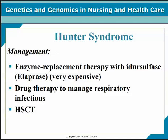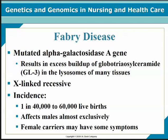I know we're moving through these quickly — they're all in your textbook. I want to give you an overview of what the lysosomal storage diseases are like and a brief overview of management. Fabry's disease is another lysosomal storage disease caused by a mutated alpha-galactosidase A gene. It results in an excess buildup of GL3 in lysosomes and many other tissues. This is an X-linked recessive disorder with an incidence of 1 in 40,000 to 60,000 live births, affecting males almost exclusively. Female carriers may have some of the symptoms.